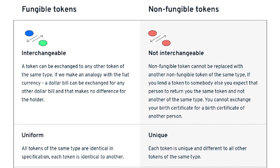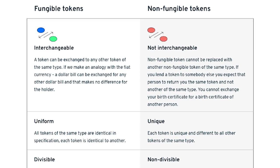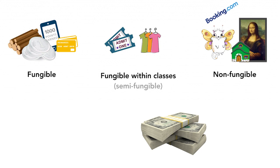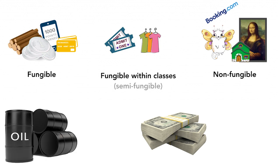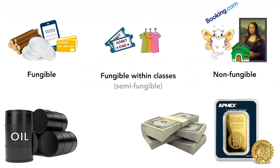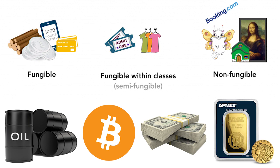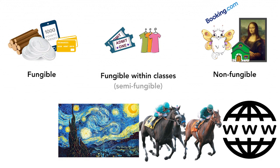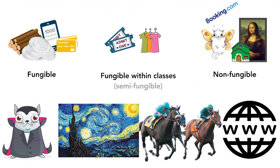Before we get started on what non-fungible tokens are, let's talk about the difference between fungible and non-fungible. Fungible is something interchangeable, meaning one unit is always the same as another unit — like cold hard cash: one dollar in my pocket is worth one dollar in your pocket. A barrel of oil is worth the same as a barrel of oil across the world. An ounce of gold is the same as an ounce of gold. Same thing with Bitcoin — it's worth the same as another Bitcoin. They are interchangeable and can be traded evenly. Non-fungible means one-of-a-kind unique items. There can be many of those items, but each one is unique — like a horse, a painting, a website, or a CryptoKitty — all the same type of objects essentially, but valued and looked at differently.